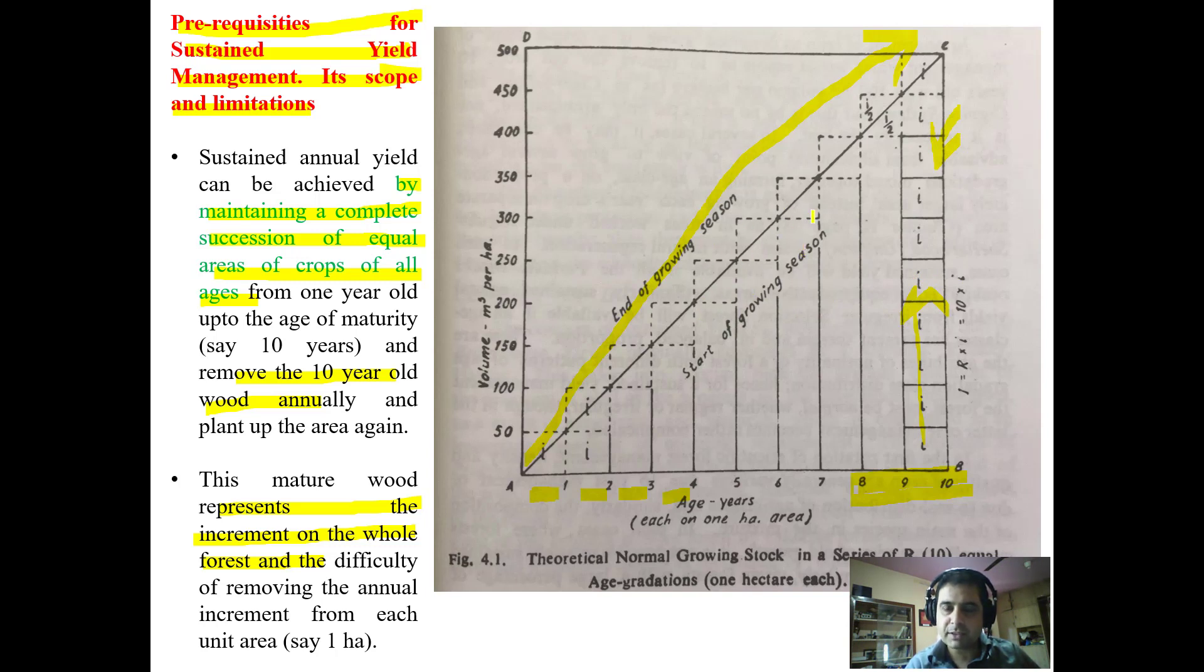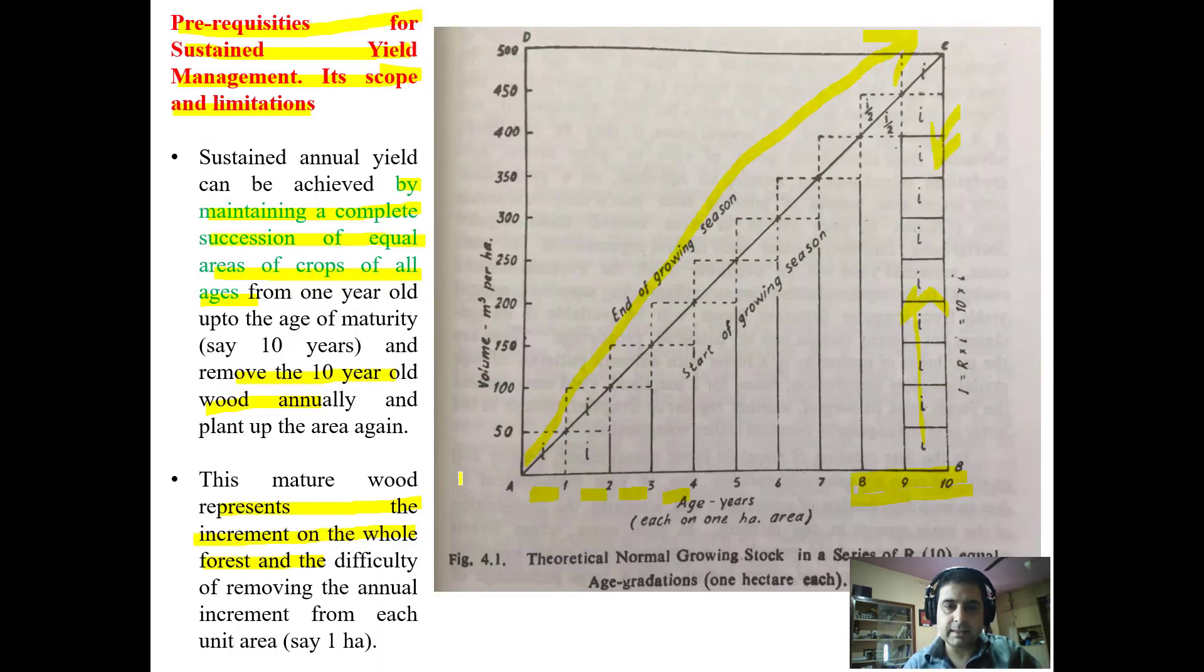So on behalf of these increments, we take increment from the 10th coupe which is ready to be harvested. I hope you got how the increment is actually contributed from all the coupes, but on behalf of all those groups, the increment is taken from the mature group. So this is all about the sustained yield concept. Thank you.